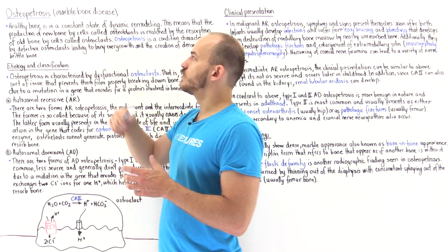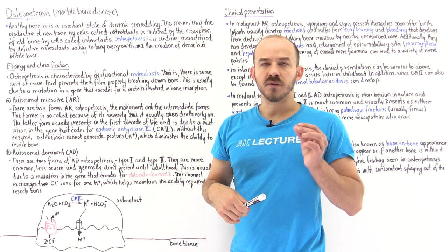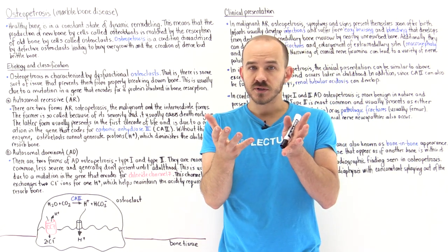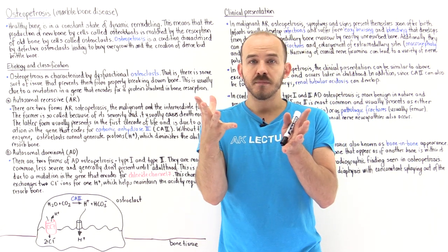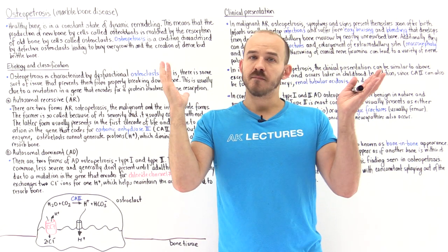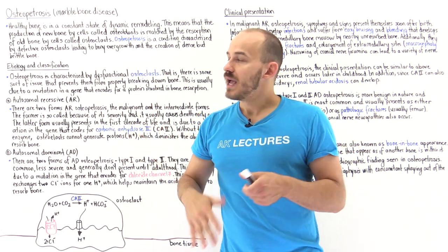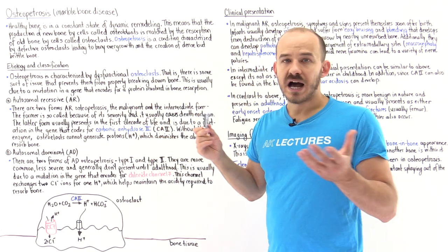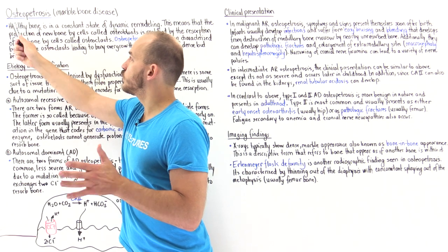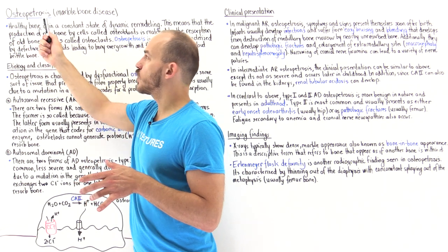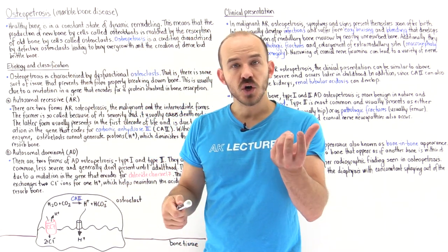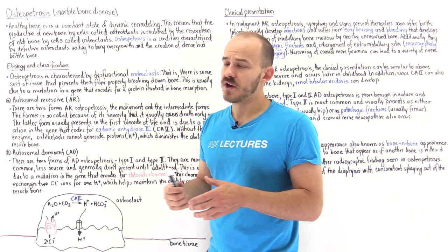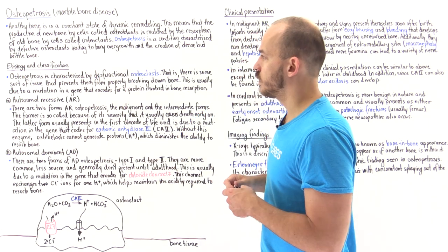That's why this is also known as marble bone disease — because even though marble is strong, if you drop it, it's going to break; it's very brittle. Osteo means bone, petrosis means stone. It has a stony appearance, but it's very brittle and weak.